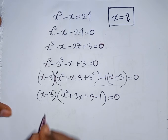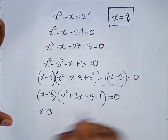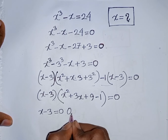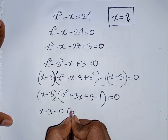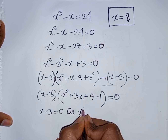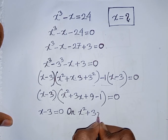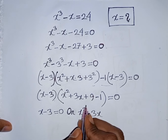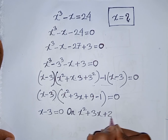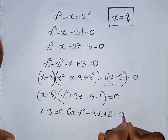Now we can write: x minus 3 is equal to 0, or x square plus 3x, then plus 9 minus 1, that means plus 8, is equal to 0.